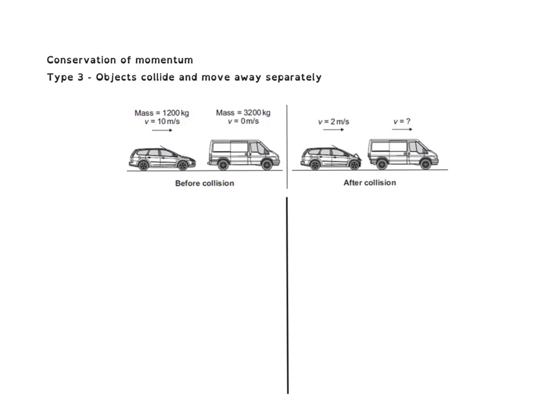In this video we're going to look at another conservation of momentum question. This is going to be a type 3 question where the objects collide and move away separately. Before the collision we have a car travelling at 10 metres per second crashing into the back of a stationary van. After the collision the car moves away at 2 metres per second and we need to calculate the unknown velocity of the van.